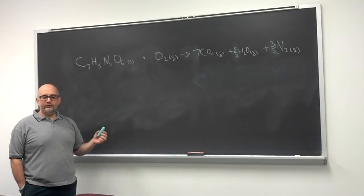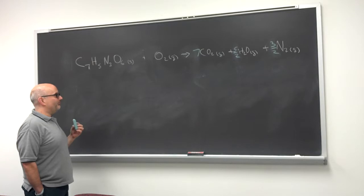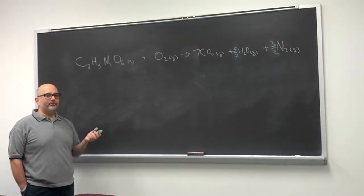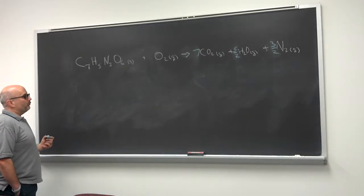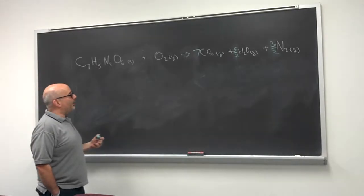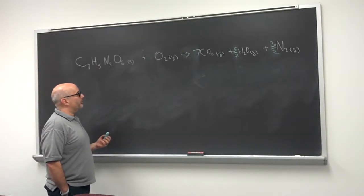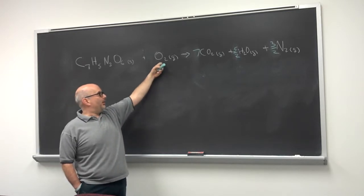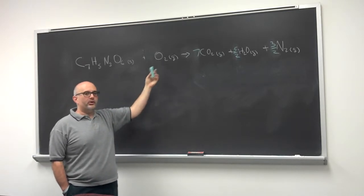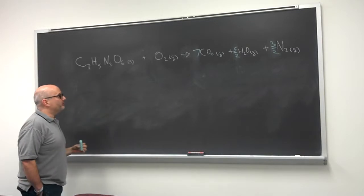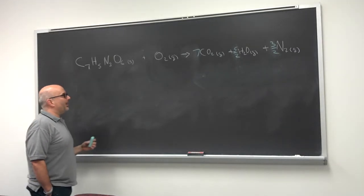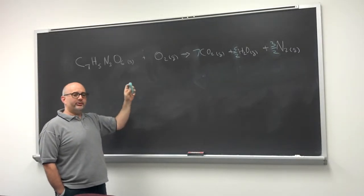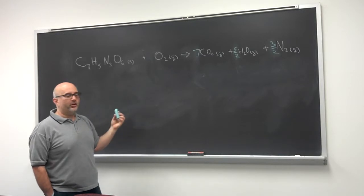And we have only oxygen to deal with. And this is what makes this a very special example. Remember one of the last rules was when you have elements that are present in their free form, which is the elements by themselves or in a compound that only has that element in it, like O2, save those for last because you can change the number of atoms of that element without changing anything else, which in this case is all balanced.